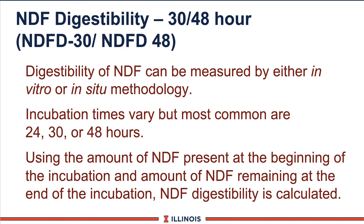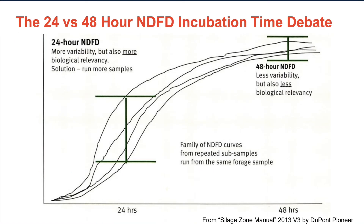Another term is NDF digestibility, known as NDF-D. You will see different hours with this — 30-hour and 48-hour. This is based on the amount of time that forage was exposed to an in vitro or in situ methodology, which would be the wet chemistry. We can now see this with NIR technology. The 30-hour is the typical time that feed stays in the digestive tract. The 48-hour has much lower variation. You may also see 24-hour, which is more commonly associated with corn silage. This schematic shows how at 48-hours the variation of these analyses is greatly reduced compared to 30-hours or 24-hours. I like 30-hour.